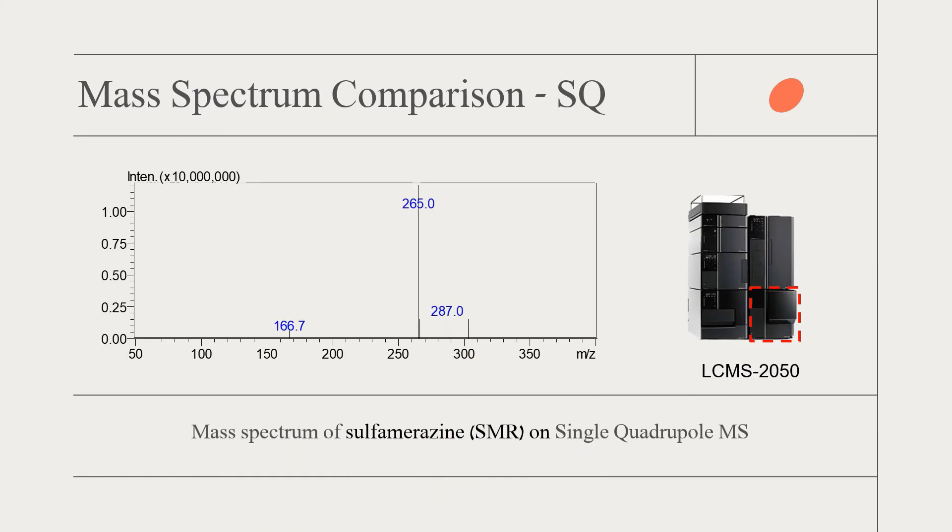Let's carry out analysis for sulfamerazine on the three types of LC-MS systems and see their differences. Here is the mass spectrum of sulfamerazine on single quadrupole MS. The scan mode spectrum confirms the m/z ratio of its protonated ion is 265 dalton. Such information is useful in the identification or confirmation of its presence in an unknown sample.